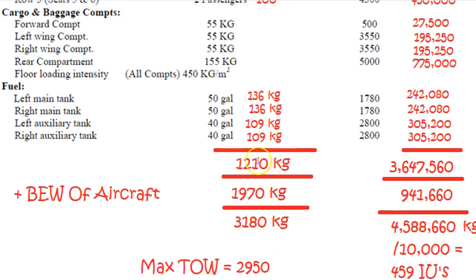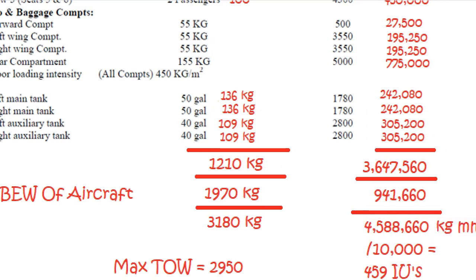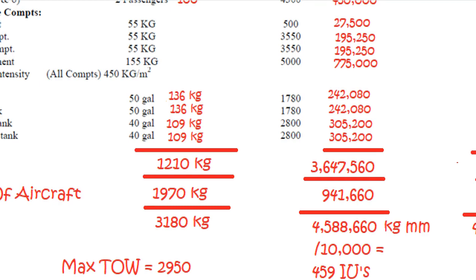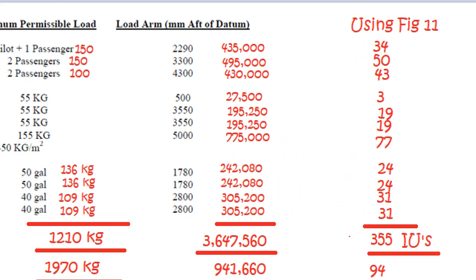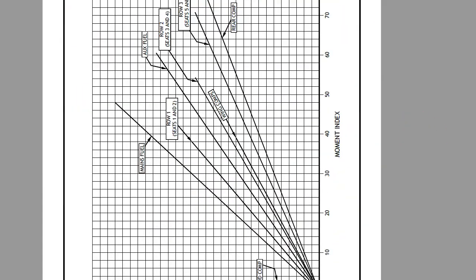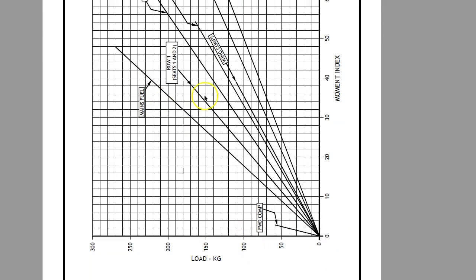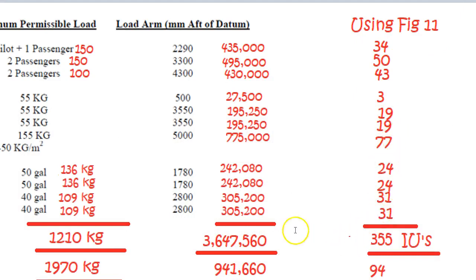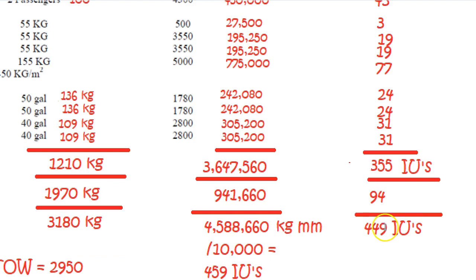Then we tally those up. Our total weight of all our fuel, passengers, and cargo comes out at 3,180, which is way over the maximum takeoff weight of 2,950. Our kilograms per millimetre comes out at 4,598,000. We divide that by 10,000 to get index units — it comes out at 459 index units, which is going to be way forward of the safe flight envelope. The other way is going to the chart, grabbing weights against each item, converting to index units. You add all of those together and you get 449 index units.